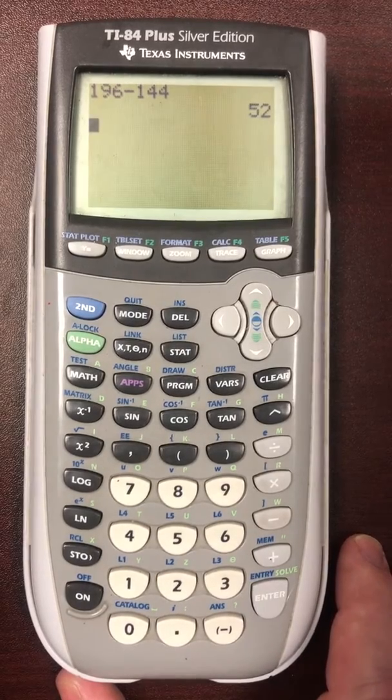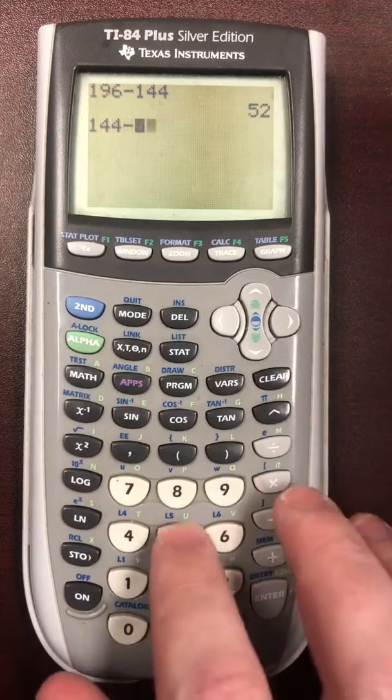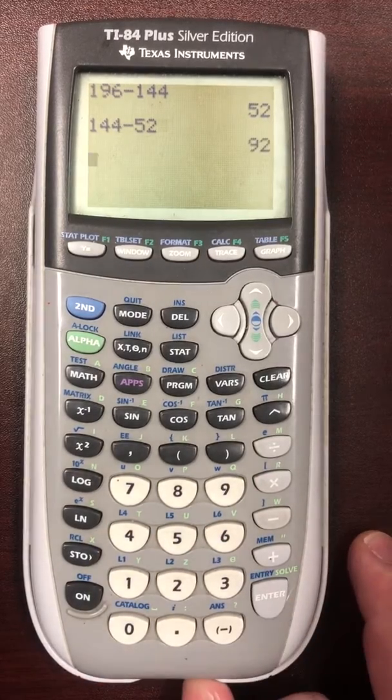Now the question in the book asks you what is the value of the big number minus the small number, in which case we can do 144 minus 52 equals 92.